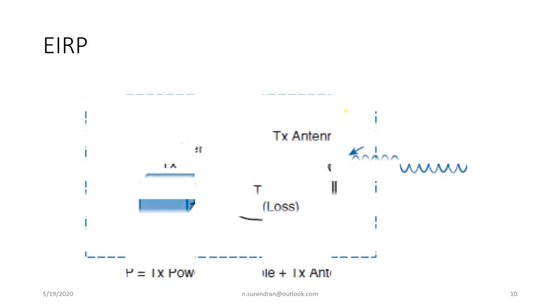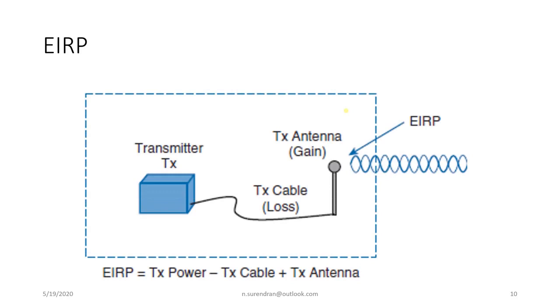EIRP — Effective Isotropic Radiated Power — is the power radiated from the antenna. The radio circuit transmits the IF frequency through the IF cable to the antenna. EIRP is calculated as: transmit power minus transmit cable loss plus antenna gain.